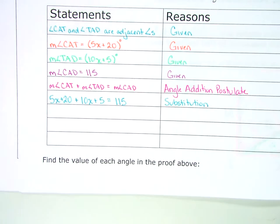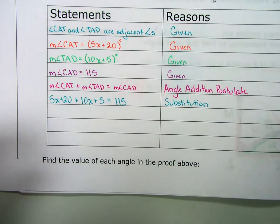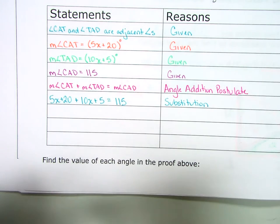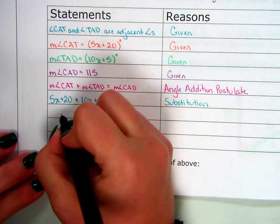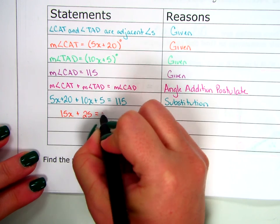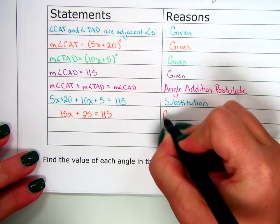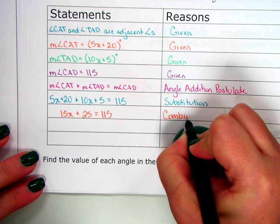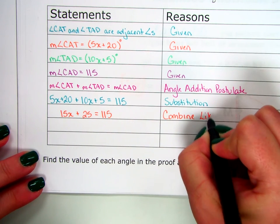So we don't have to put in the parentheses and the degree symbol. We can just substitute in the value 5X plus 20. And then plus T-A-D is 10X plus 5. And then C-A-D is 115. If you do put in the parentheses and the degree symbol, it's not wrong. It's just extra information you've added in there. And then sometimes that confuses you because you see parentheses and you're like, I'm not sure what I'm supposed to distribute. What am I writing as my reason here? Substitution. All right, now what? Combine like terms.